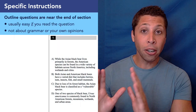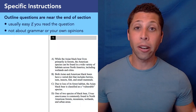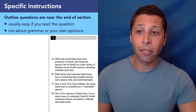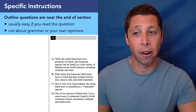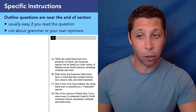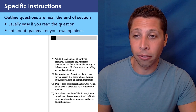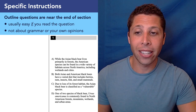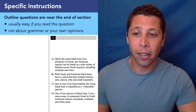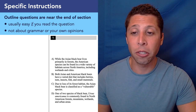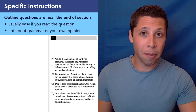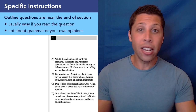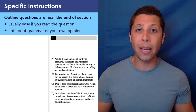I'm going to present one of these outline questions in a weird way — just the answer choices, without any background. Choice A: While the Asian black bear lives primarily in forests, the American species can be found in a wide variety of habitats across North America, including wetlands and cities. Choice B: Both Asian and American black bears have a varied diet that includes berries, nuts, insects, fish, and small mammals. Choice C: Due to loss of its forest habitat, the Asian black bear is classified as a vulnerable species. Choice D: One of two species of black bear, Ursus americanus, is commonly found in North American forests, mountains, wetlands, and urban areas. Which one is the best fact? We don't have anything to go on — we don't have a task yet.